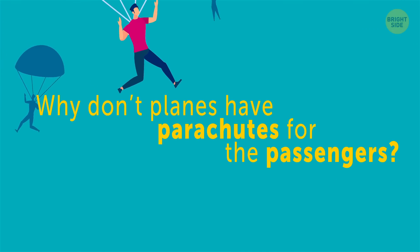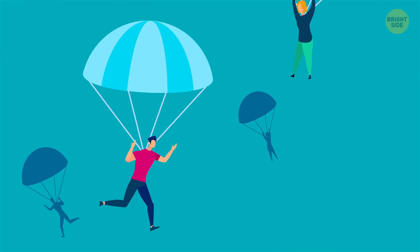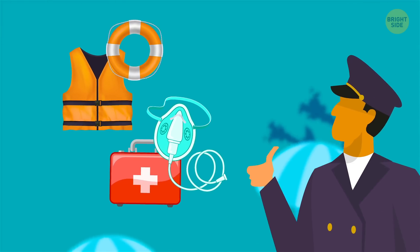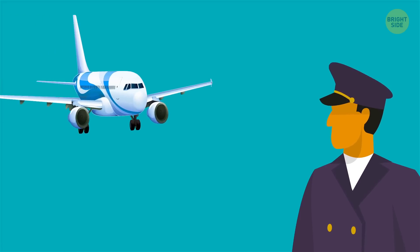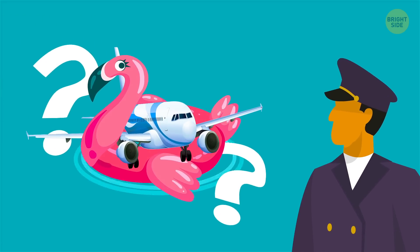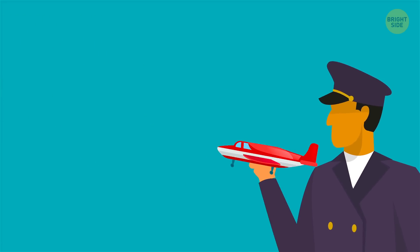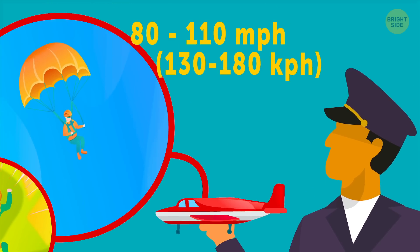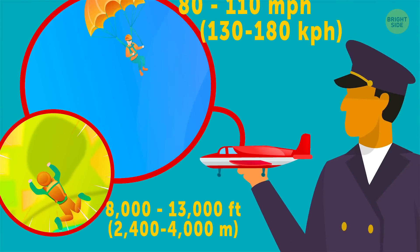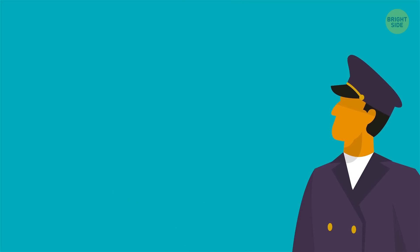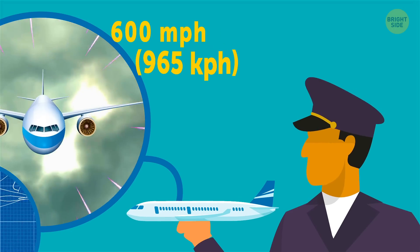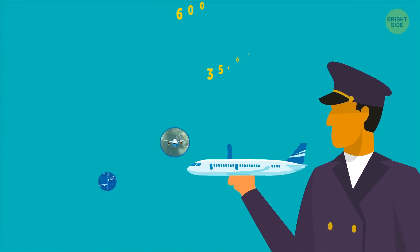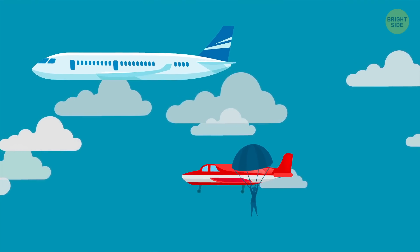Why don't planes have parachutes for the passengers? Well, it's a legit question. After all, they have oxygen masks and the seat cushion is a flotation device — but what good will a floaty do tens of thousands of feet in the air? As it turns out, parachutes won't do you much good either. Skydivers usually jump out of planes moving somewhere between 80 to 110 mph at an altitude of 8,000 to 13,000 feet. By contrast, a commercial jetliner flies around 600 mph at its cruising altitude of 35,000 feet. The math alone should show why parachutes may not do much good on a standard flight.